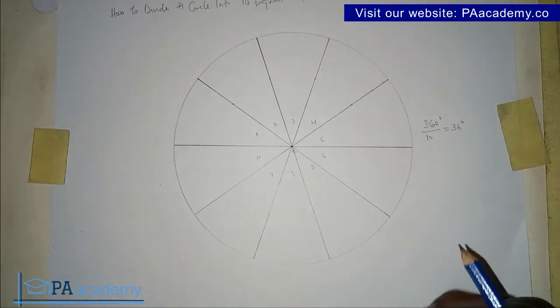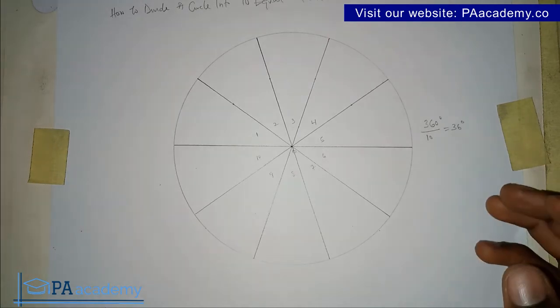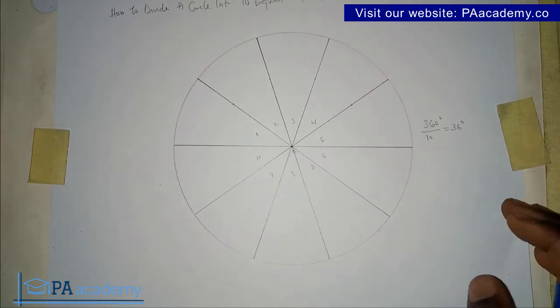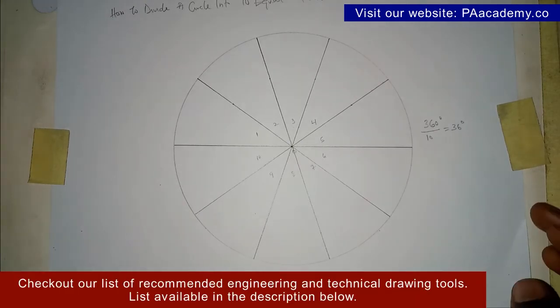If you found value in this video, please give it a thumbs up. If you also want to know how to divide a circle into other numbers of parts, maybe five, six, eight, 12, and so on, I will leave the link to those videos in the description. You can also check the playlist on technical and engineering drawing. There are a lot of videos there that I believe will be of help to you.